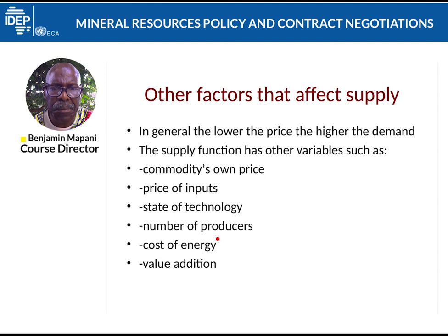Another important factor is the cost of energy. If the energy price is very high, it becomes very expensive to produce a commodity, meaning the commodity will be priced very high or you will make a loss. The other very important thing is value addition — instead of selling a metal as ore or as a raw finished product, you take it further and produce something out of it: for example, producing a laptop from gold and cotton, a motor vehicle from copper, or an airplane from aluminium and steel.